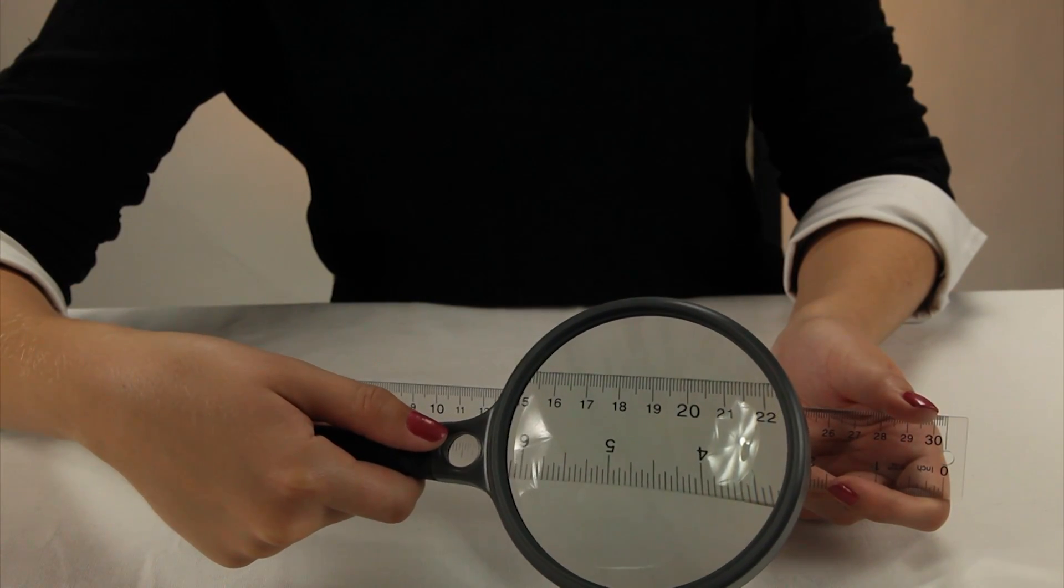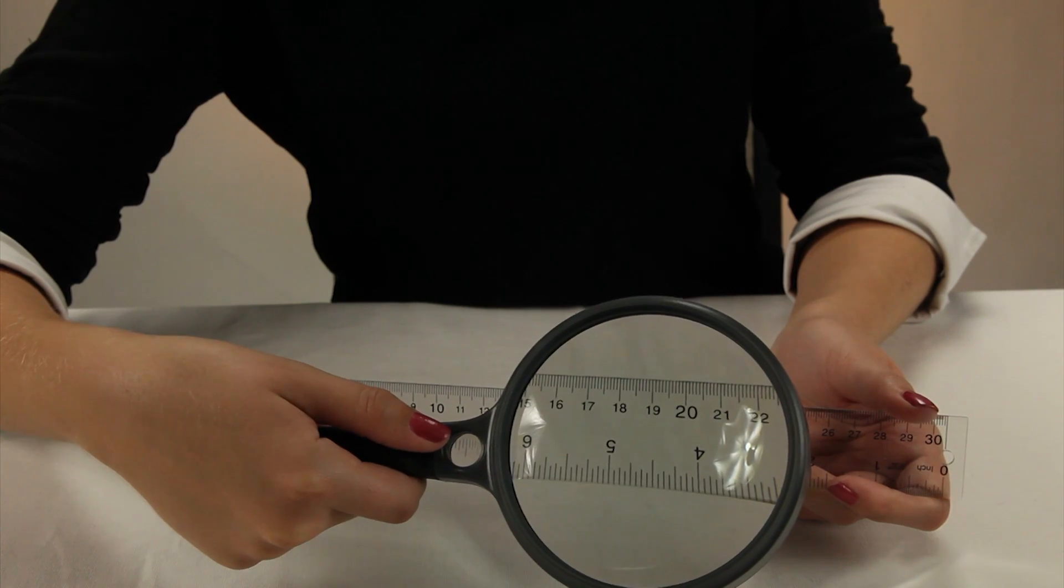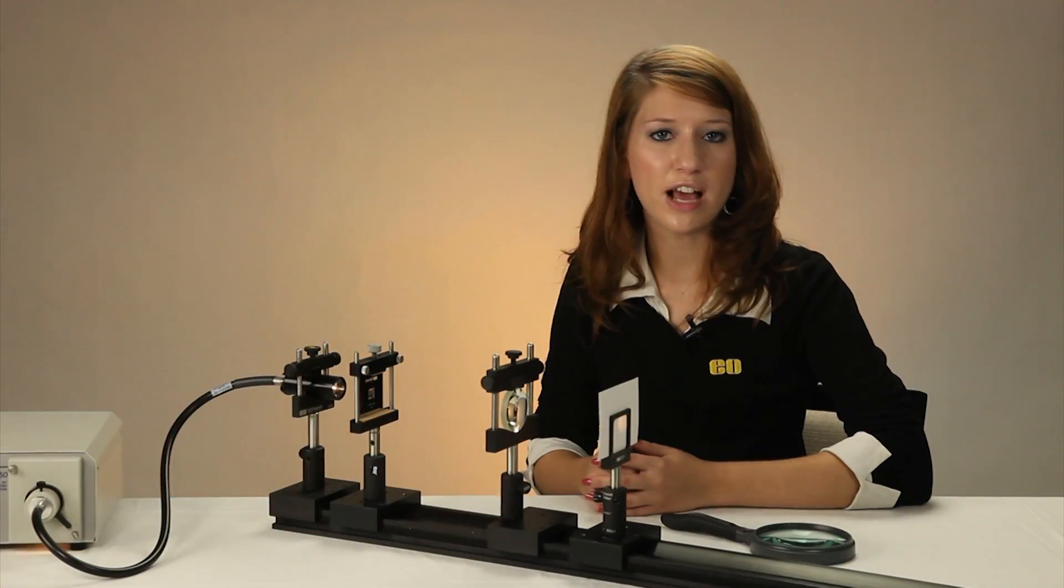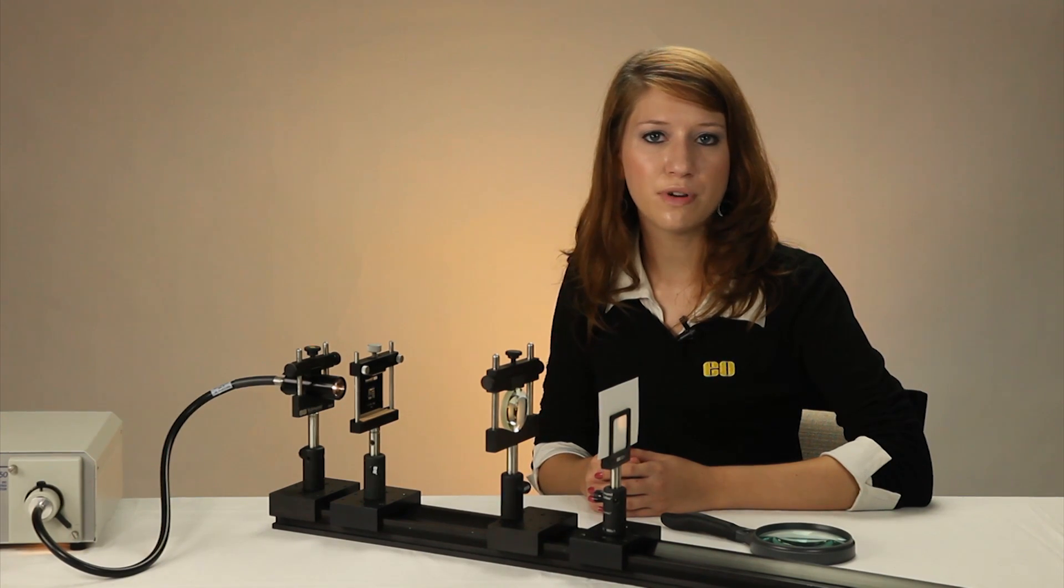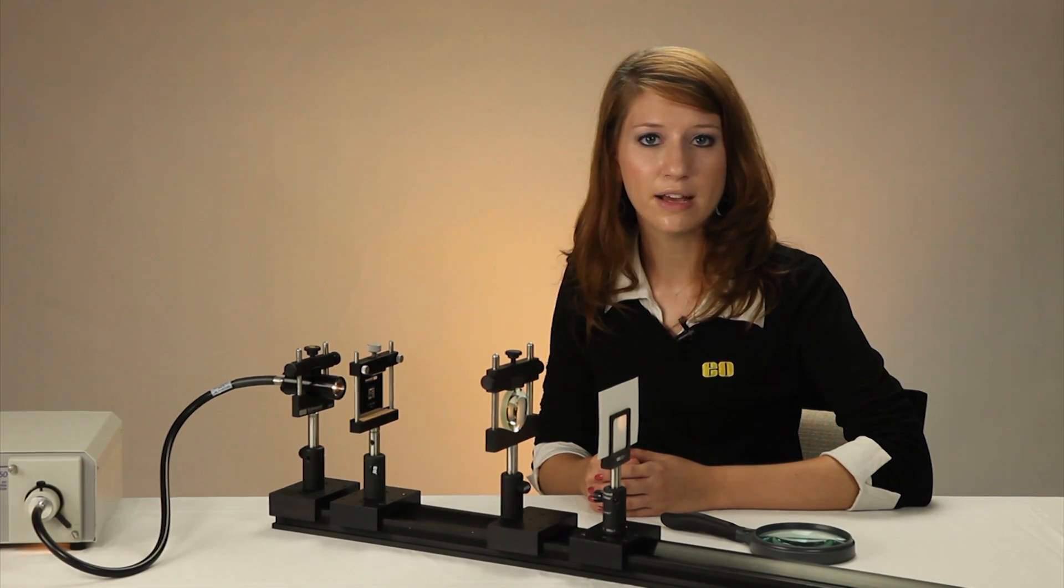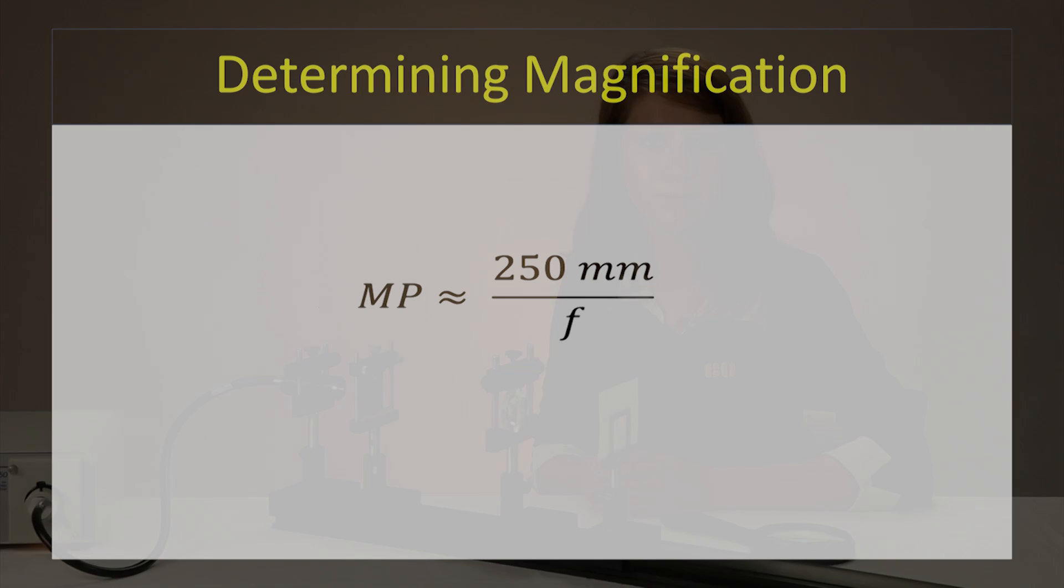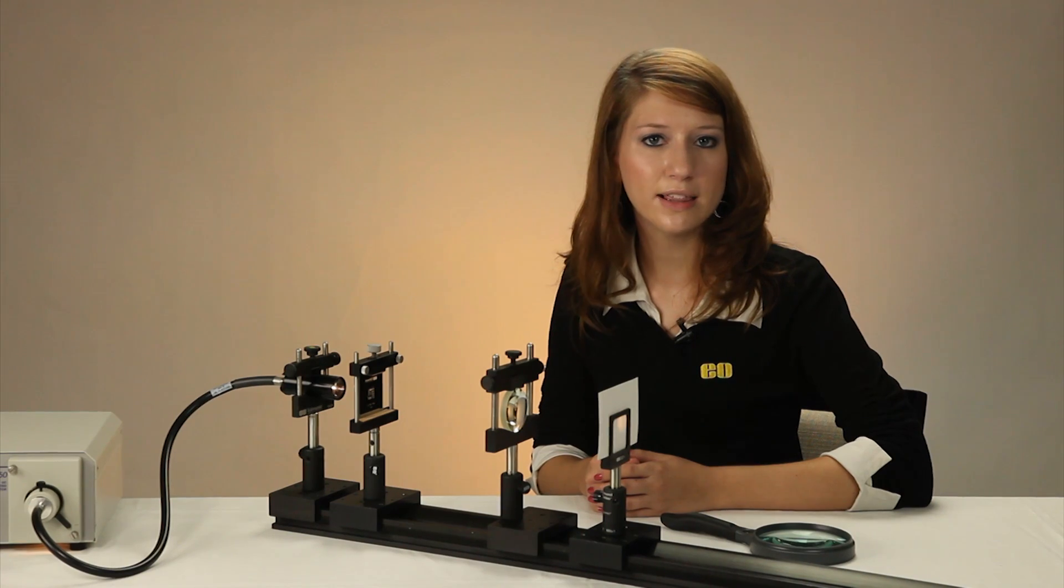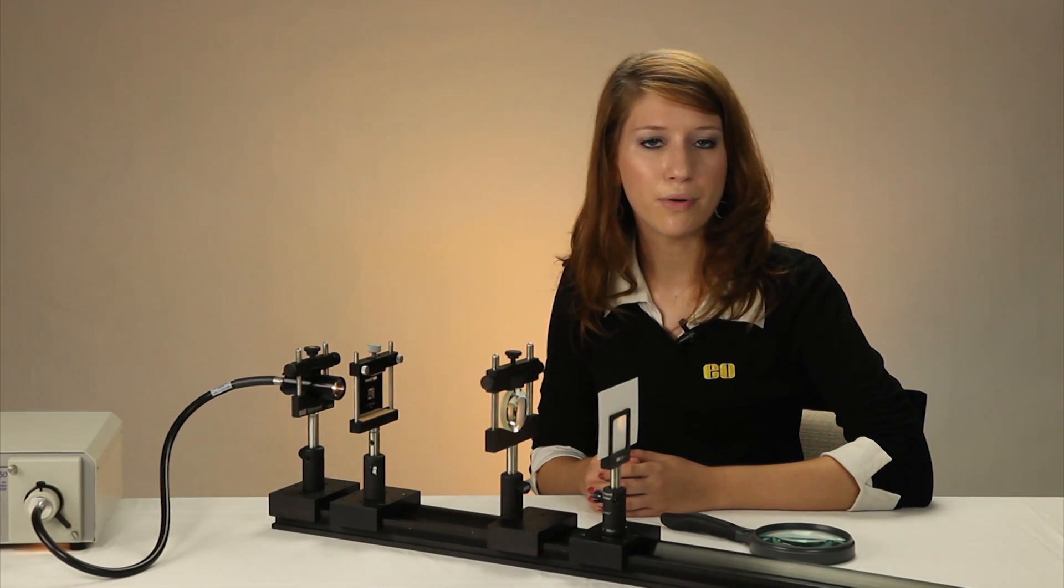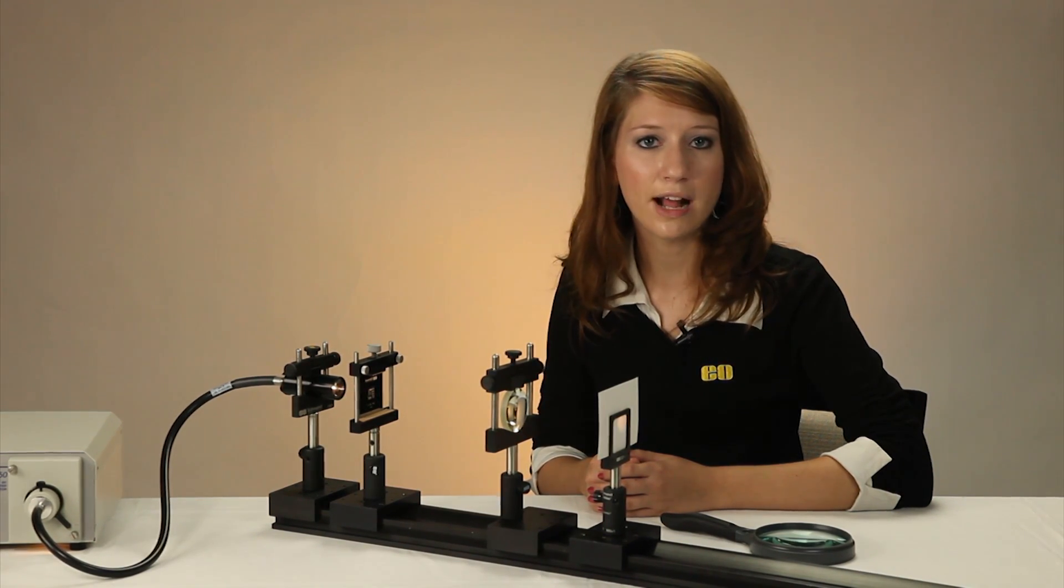The magnifying power can be determined when the lens is at the near point of your eye, which is about 10 inches or 250 millimeters in front of the eye. To find the approximate magnifying power, divide the 250 millimeter near point length by the focal length of the lens in millimeters as shown in this equation. For example, a 25 millimeter focal length lens provides magnifying power of approximately 10x when held near the eye.